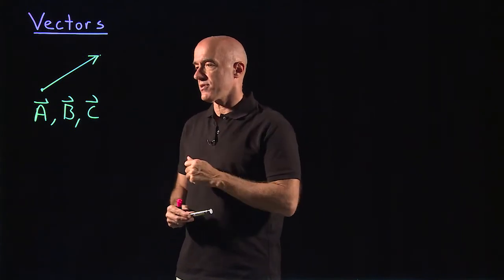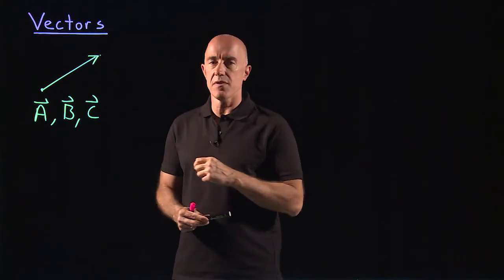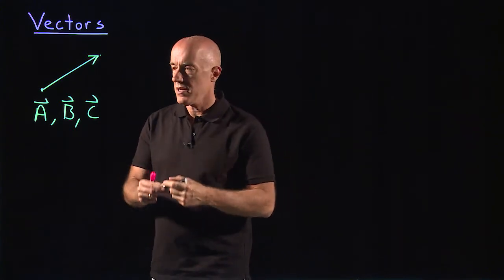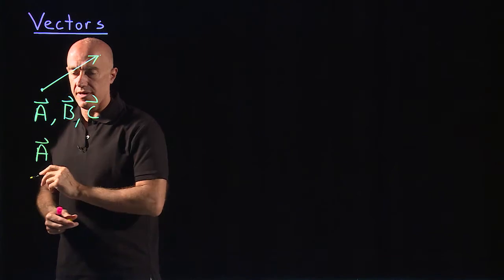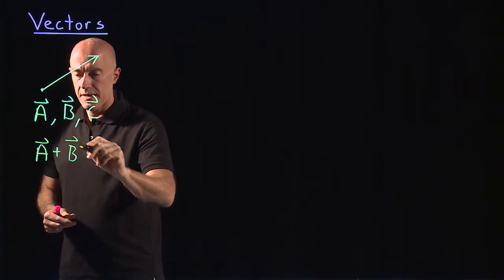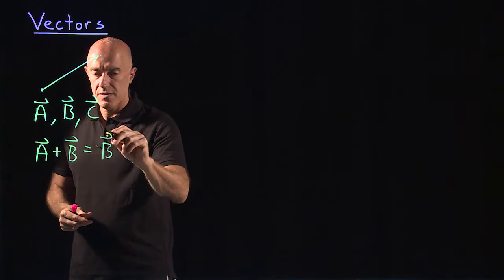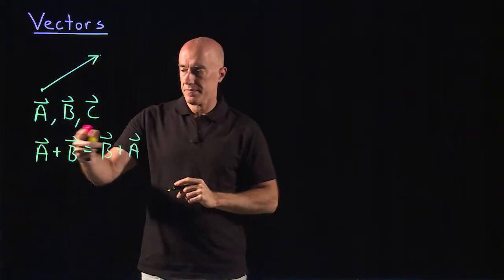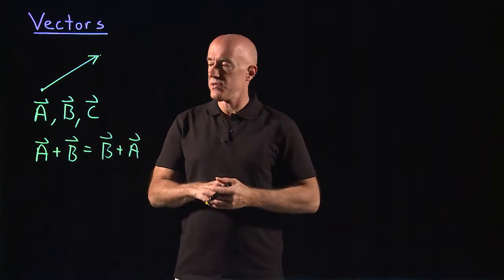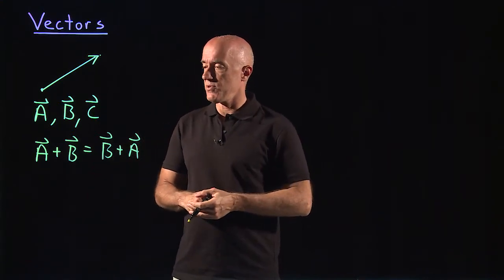So these vectors satisfy certain rules of algebra. They commute. The commutative law is a plus b equals b plus a. That means you can add vectors, and addition is commutative.